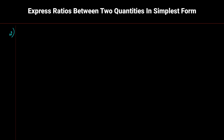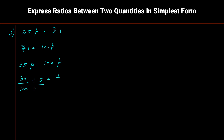Second example: 35 paise to 1 rupee. We convert rupees to paise since rupees is of higher denomination. 1 rupee = 100 paise. Now we compare 35 paise and 100 paise. Dividing 35 by 100, the common factor is 5: 5 × 7 = 35 and 5 × 20 = 100. So the ratio is 7 : 20.